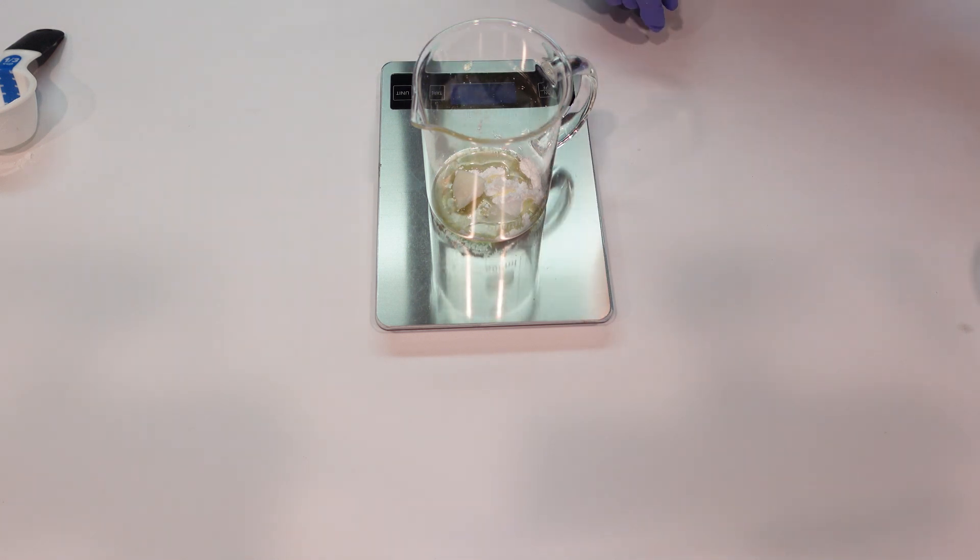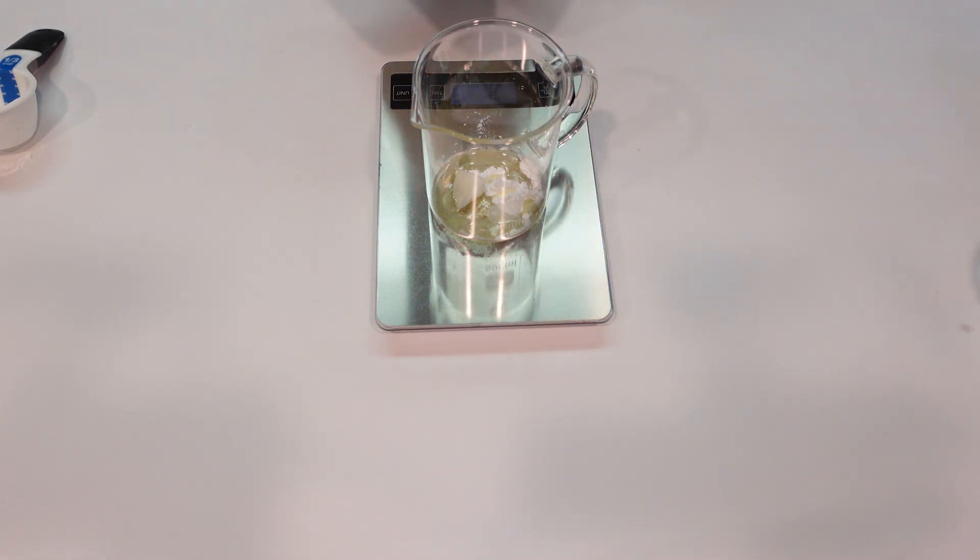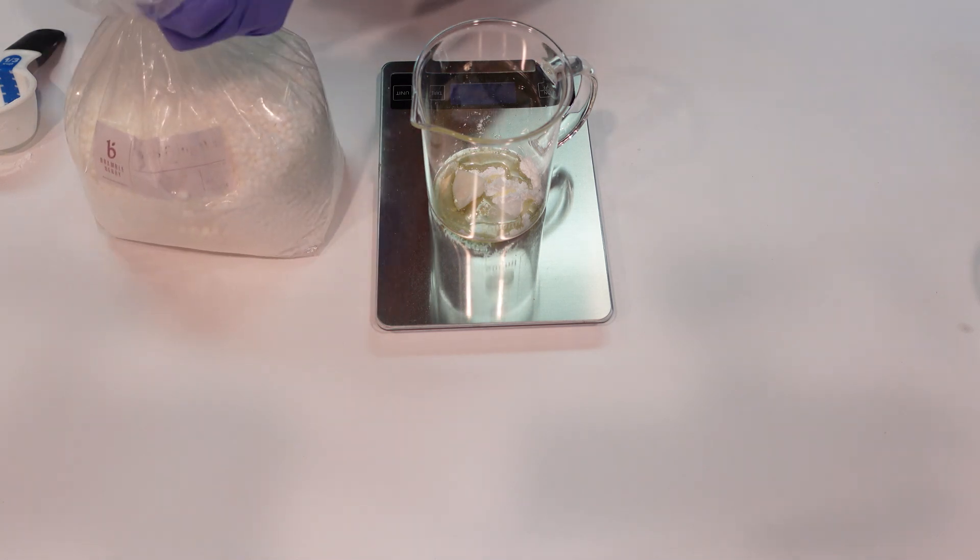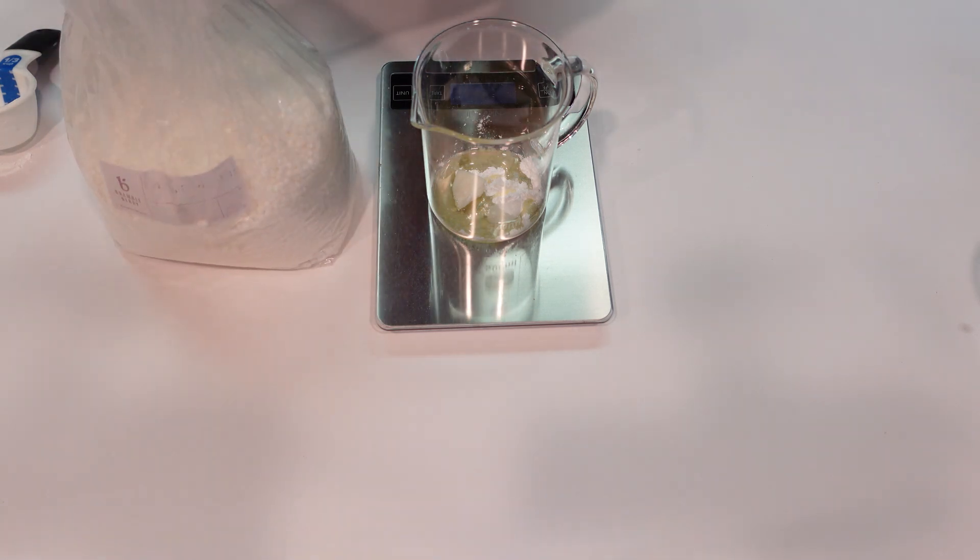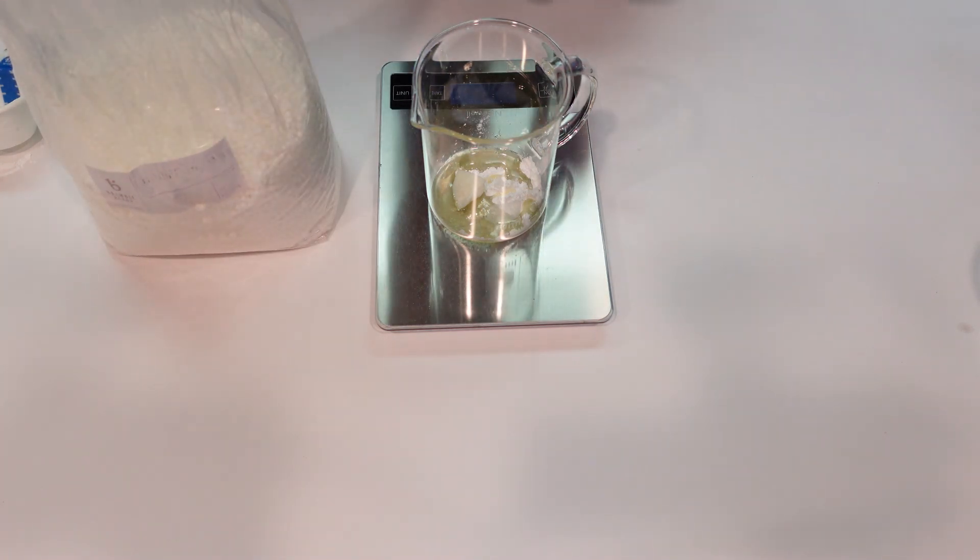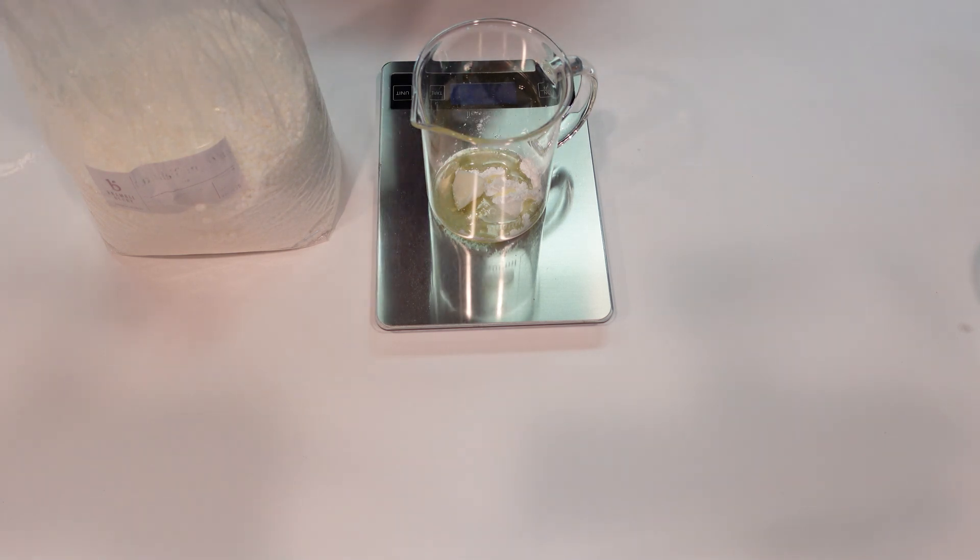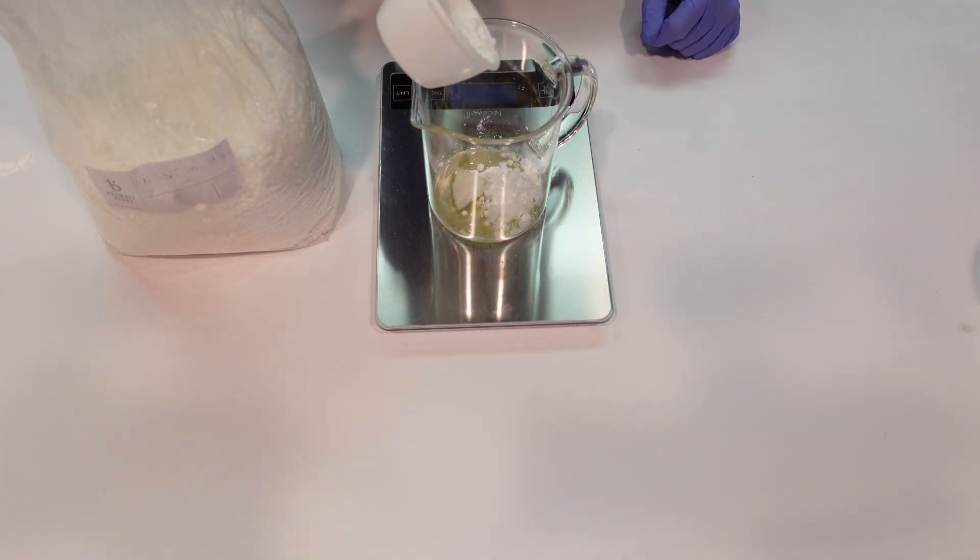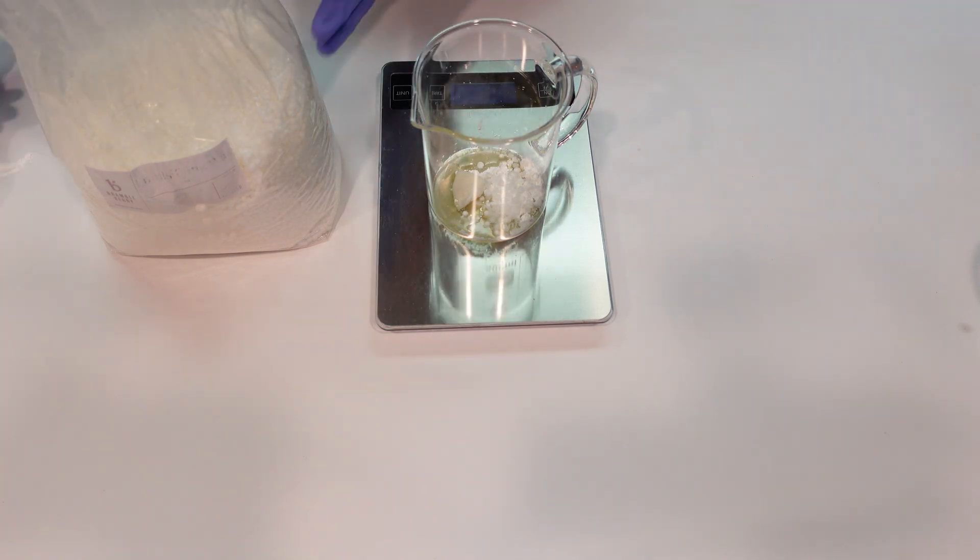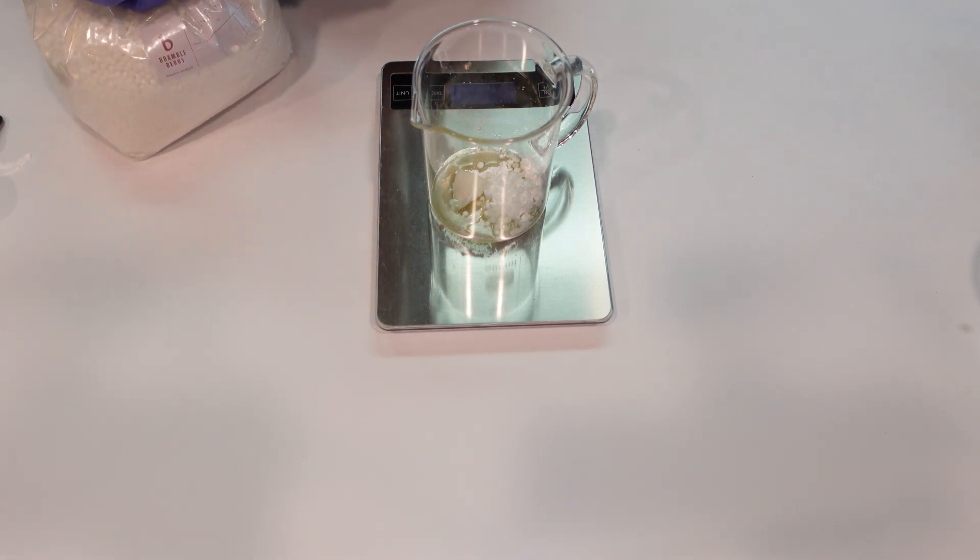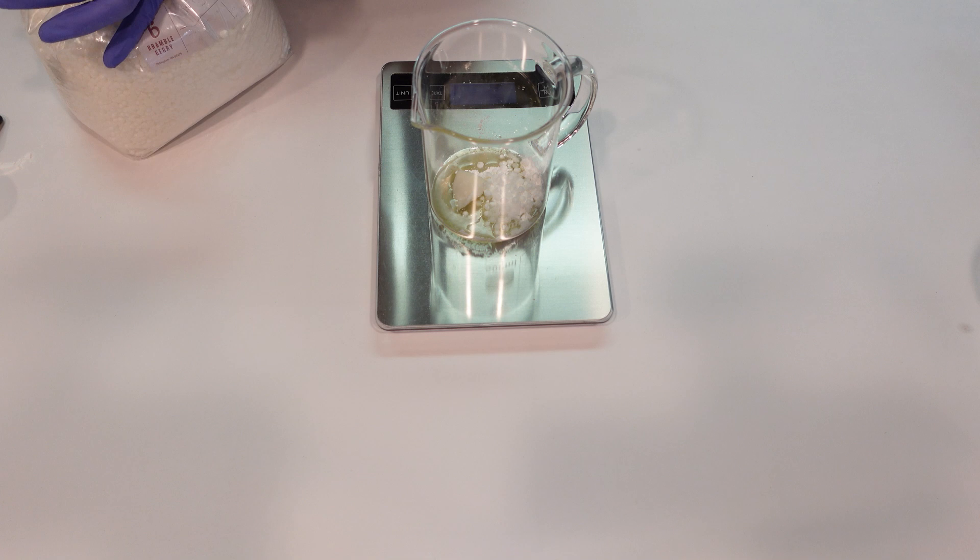Next up we're going to be adding in some emulsifying wax. Now the emulsifying wax, this is a necessary ingredient in creating any type of oil and water emulsion. This is what's going to create the lotion part—it's going to help our water and our oils to stay combined. Without it, they will separate, so this is a necessary ingredient. We're just using a generic emulsifying wax.